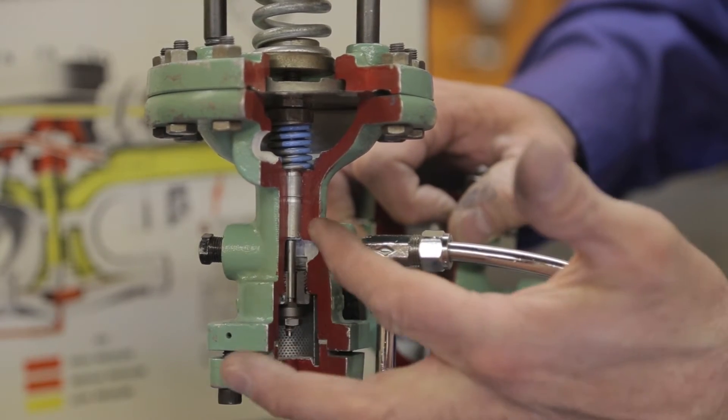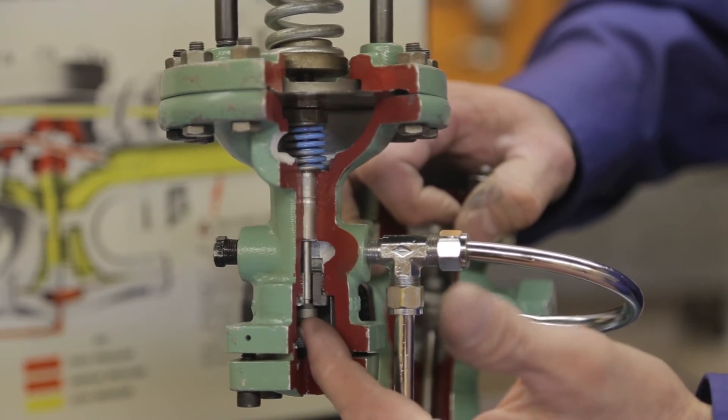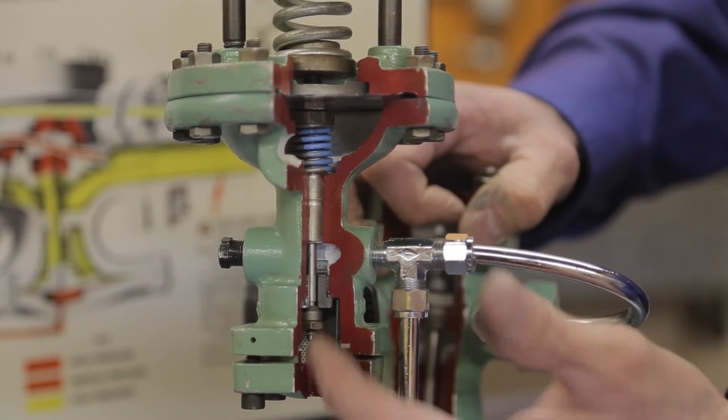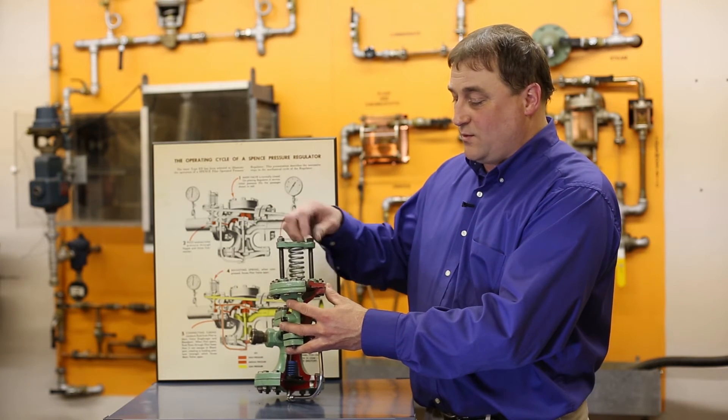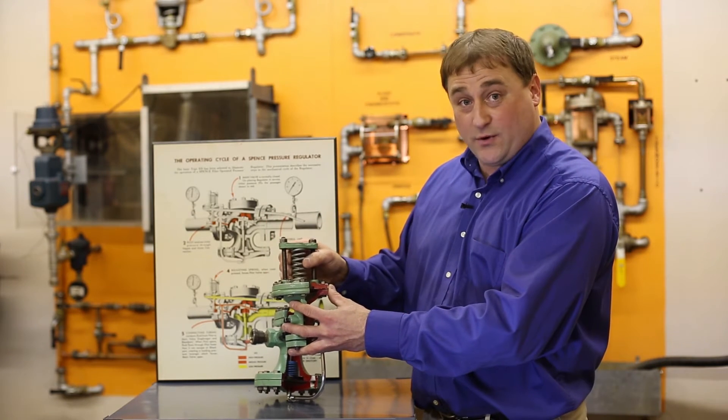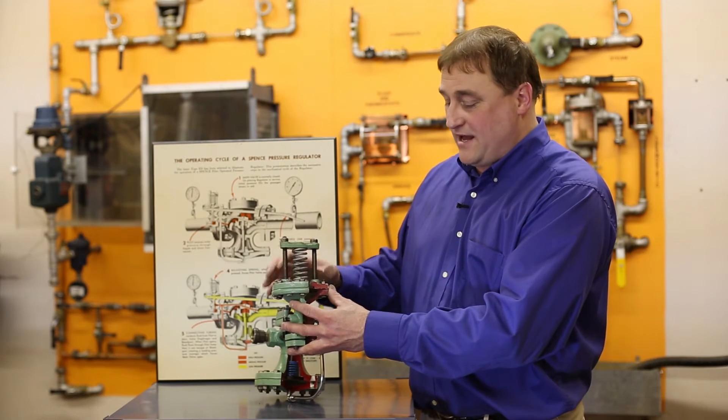This area is connected via the delivery line or sensing line that ties into the downstream side that we're trying to control. The tighter that we adjust these nuts, the more spring force they put down on the valve.